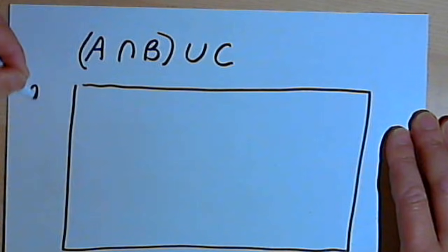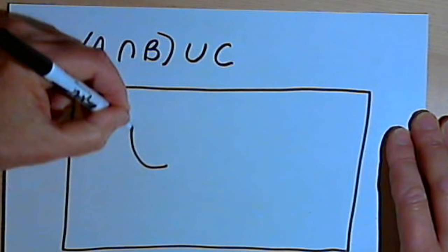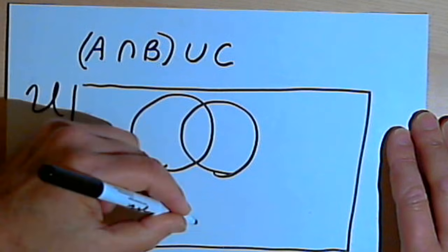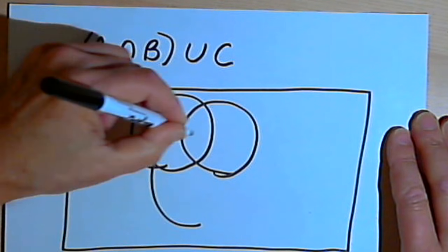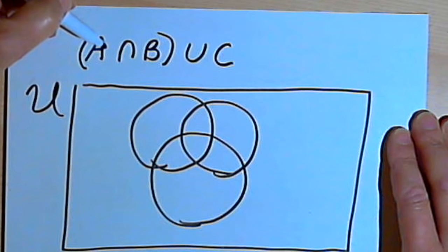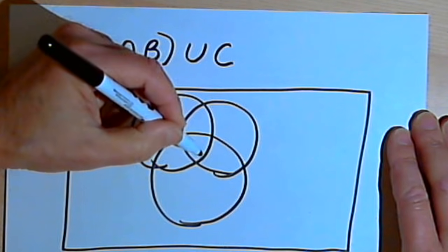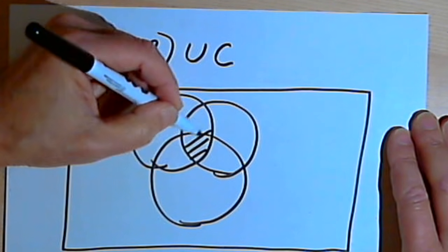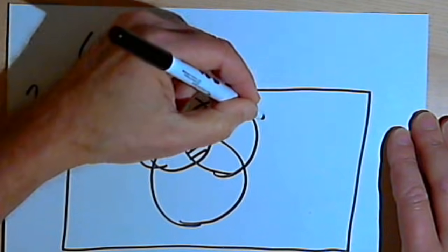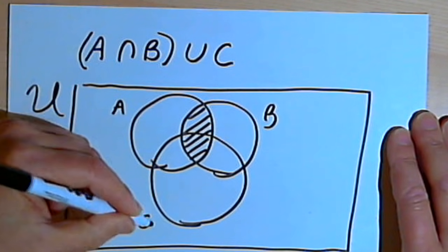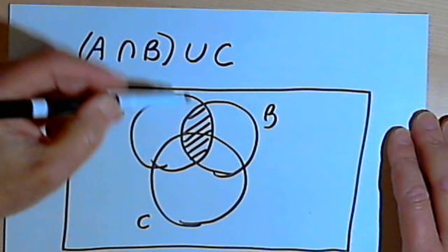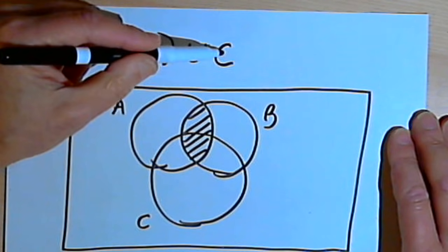Inside my universal set I draw three overlapping circles, and the intersection of A and B is still going to be that overlap between A and B.